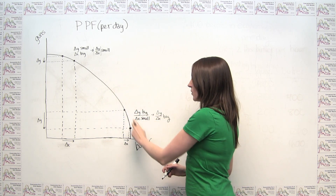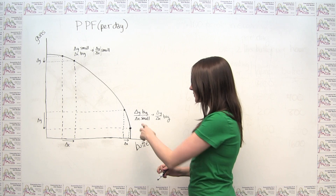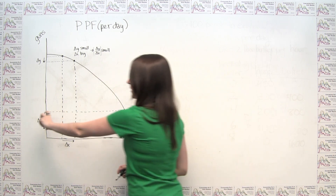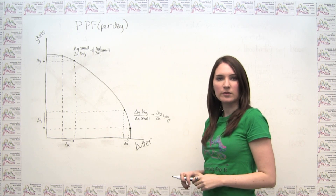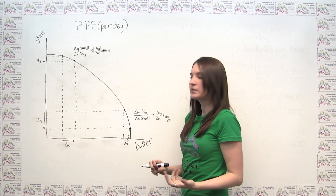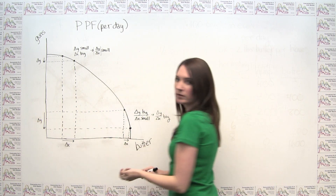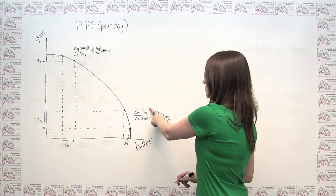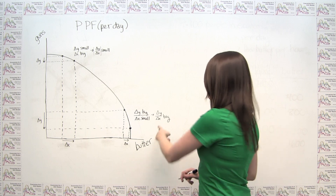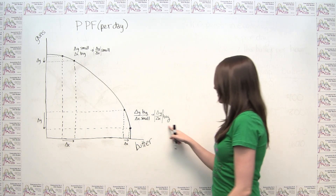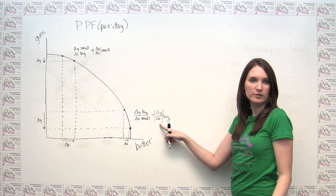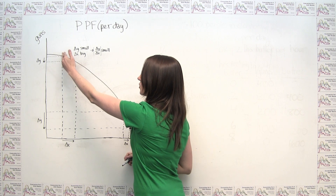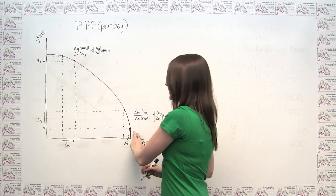As we get down towards the bottom of the curve, we notice it gets a lot steeper. When we're producing a lot of butter and not a lot of guns, it takes a comparatively large decrease in the number of guns produced to get just a small increase in the amount of butter. So here we need a large decrease in our y variable to get just a small increase in our x variable. When we think about the slope, we end up with a big change in y divided by a small change in x, giving a large absolute value of the slope. In general, with this bowed-out shape, the slope increases as we go from the top to the bottom of the curve.